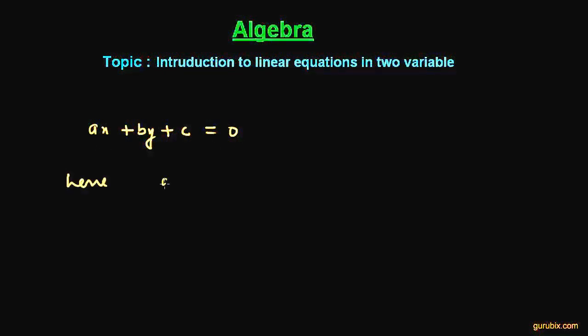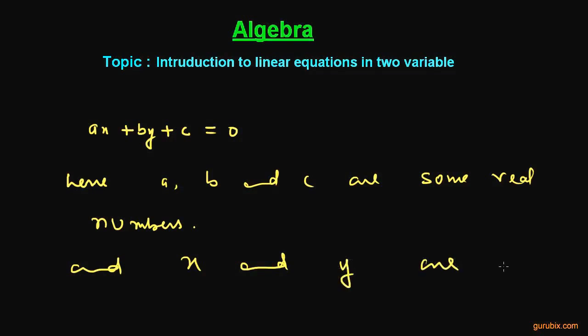Here, a, b, and c are some real numbers, and x and y are variables. And since we have used these two variables, this equation is of two variables.